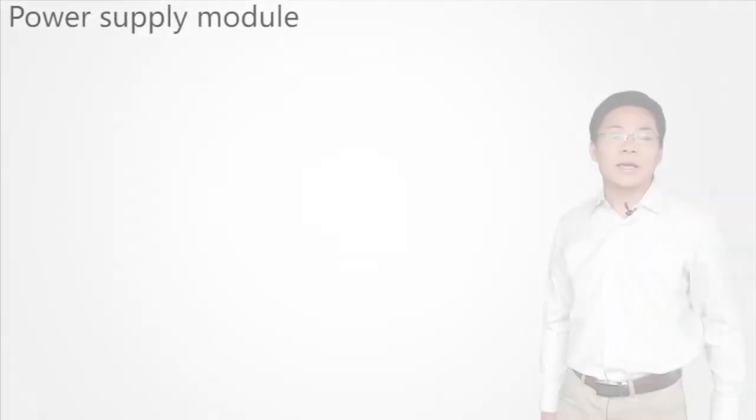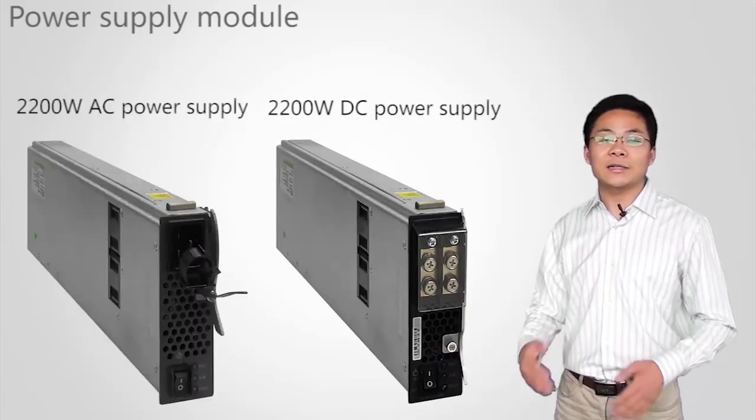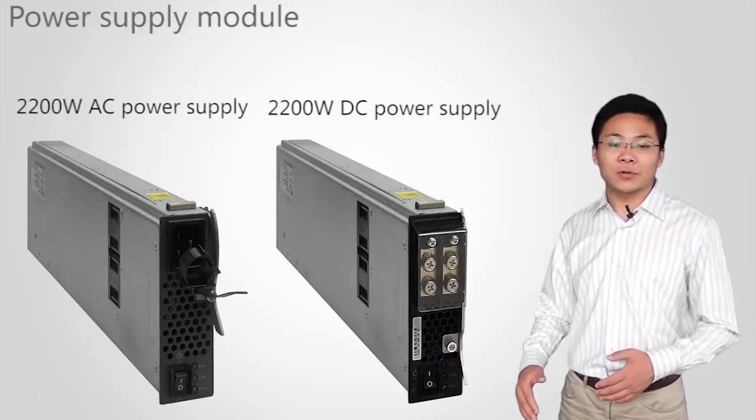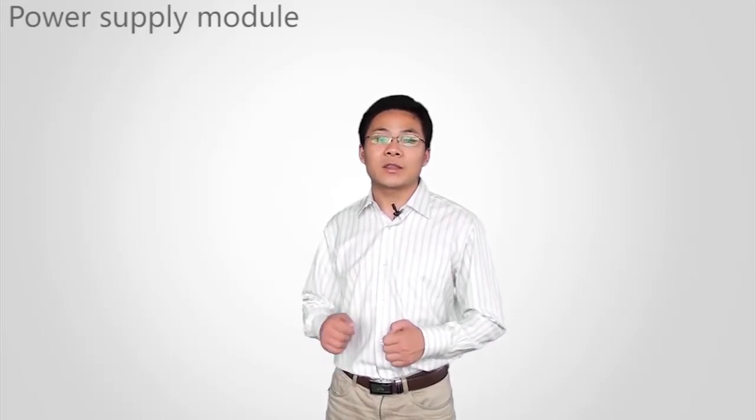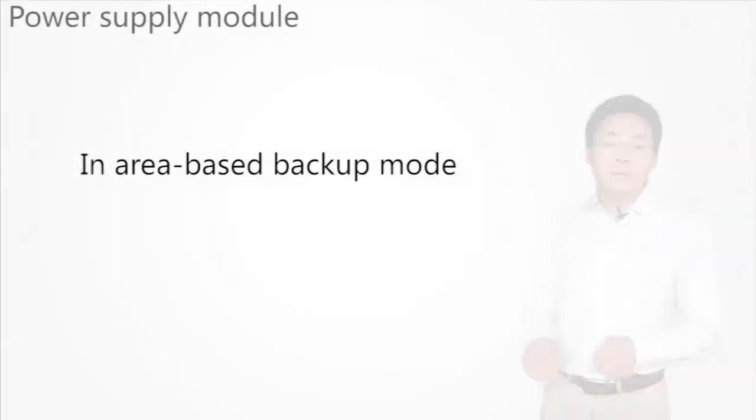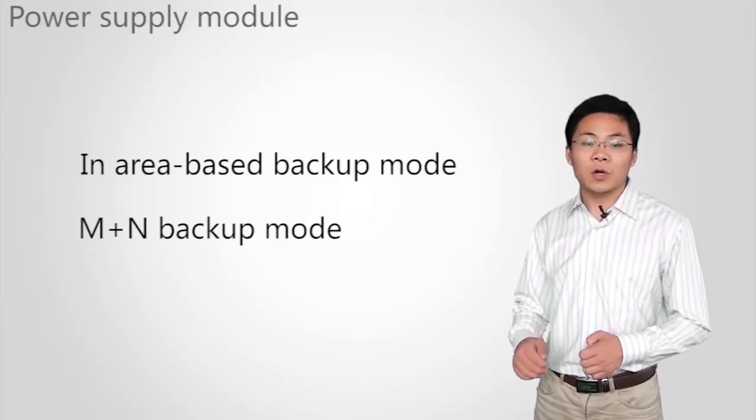Power supply module. S9700 supports a 2200W DC power supply and a 2200W AC power supply. Both DC and AC power supply modules support EMC filtering and have powerful self-protection functions. S7700 has active and standby power supply modules. S9700 power supply modules work in M plus N backup mode. They are not area-based like S7700 modules. In area-based backup mode, the power supply module in a slot can be either active or standby. In M plus N backup mode, all power supply modules load balance traffic and support hot swapping. Their functions are not determined by slot function location.